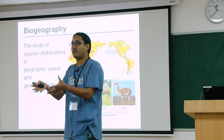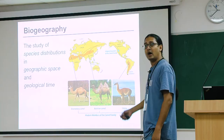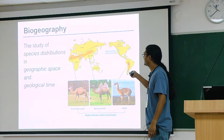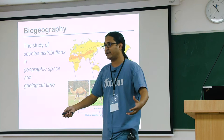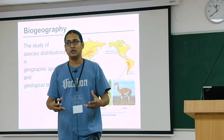For example, if you look at camels and their distribution, they're found in Africa, the Middle East, Central Asia, and also in South America — the llamas, vicuñas, and alpacas. And you have the dromedary camel and the Bactrian camel in Africa and Asia. How is it that these continents, separated by so much sea, can have species that are so closely related? We know the ancestor of camels came from North America and then spread. These are the kinds of questions biogeography is interested in.